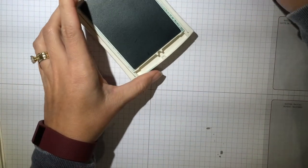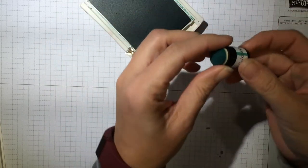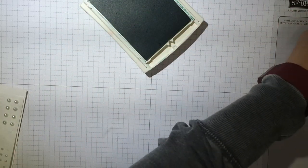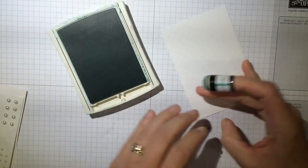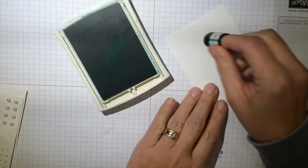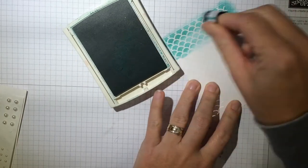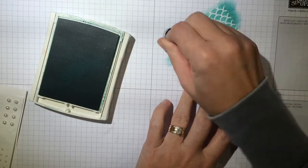And you're just going to take your dauber. I'm going to start with Coastal Cabana. Let's get my paper right here. I'm going to start with Coastal Cabana and I'm just going to start going across like this. Every now and then re-ink your dauber.